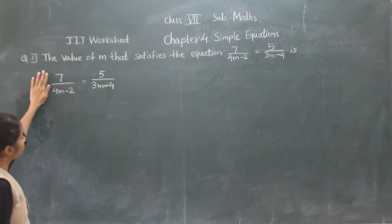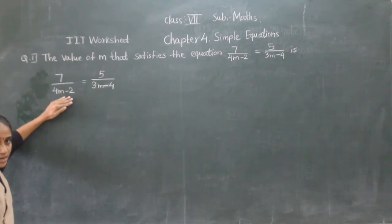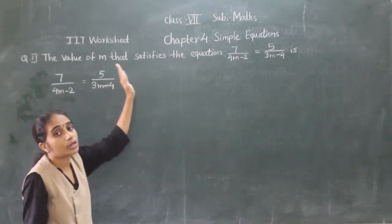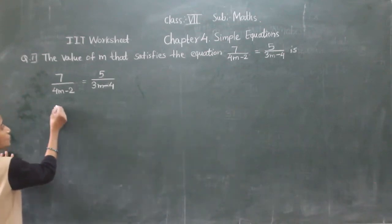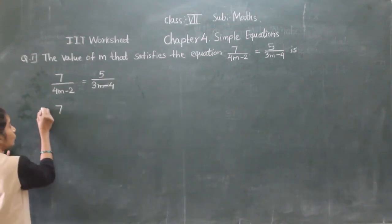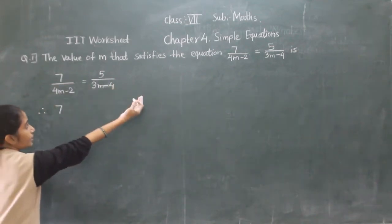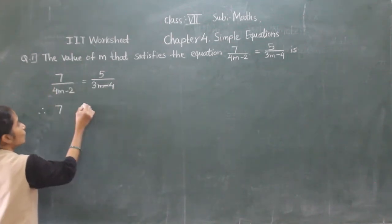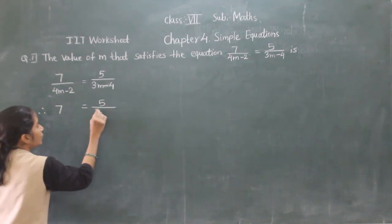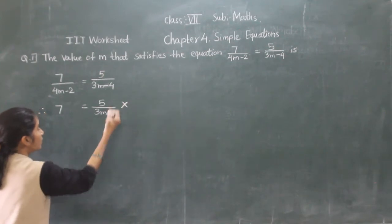If you will see, this number is here — divide. 4n minus 2 is in the denominator, divide. We will transfer 4n minus 2 to the right hand side, then it will become multiplied. So 5 upon 3n minus 4 — now this number will transfer to this side, then it will become multiplied.